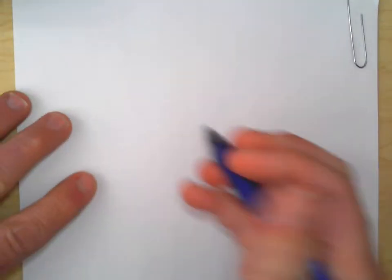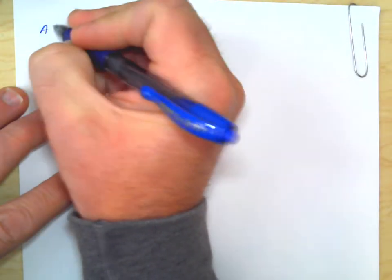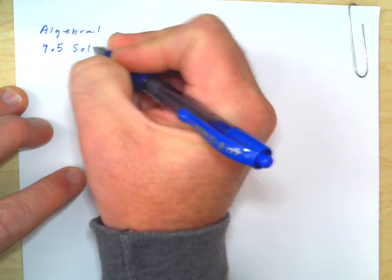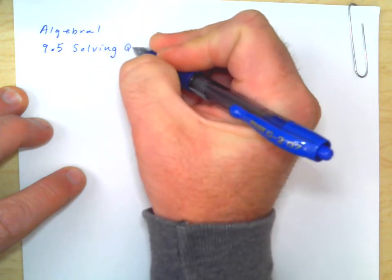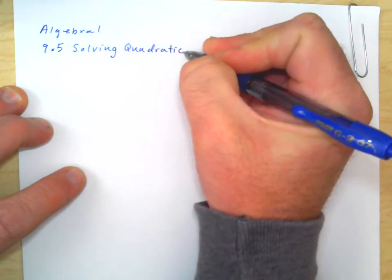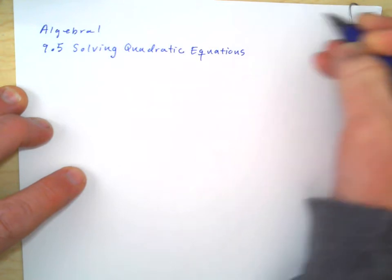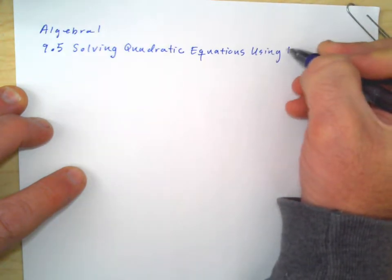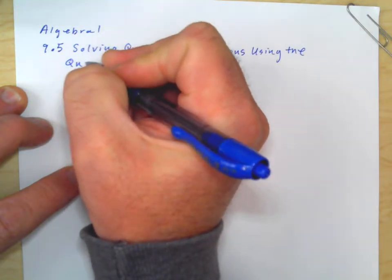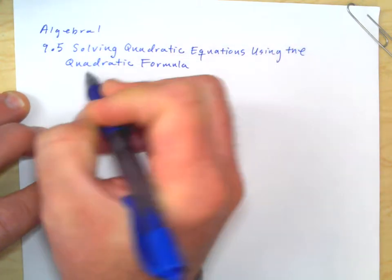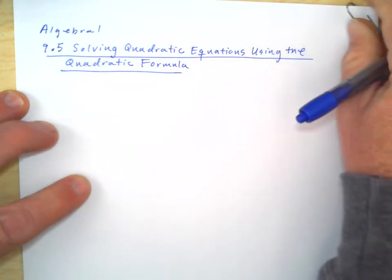Good morning, Algebra 1. This is our last lesson. I'm going to be covering Algebra 1, section 9.5, solving quadratic equations, which is what we've been doing for several sections. But we're going to learn a new way to do it today — solving quadratic equations using the quadratic formula. It's probably one of the most used math formulas in my math classes.